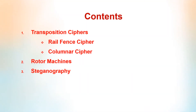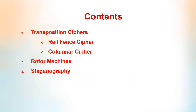These are the contents: transposition ciphers, for example rail fence cipher and columnar cipher, then rotor machines and steganography.